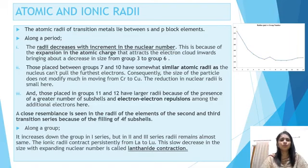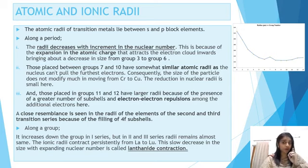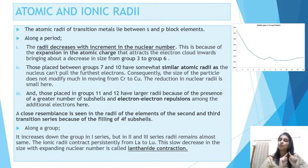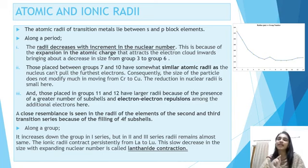Coming to the group trend: the first group has 3D, the next has 4D, and then 5D. In 4D there is an additional 4F orbital, and similarly 5F is also there. With the addition of an orbital, the F block elements — from lanthanum to lutetium, 14 elements in the middle of the long form of the periodic table — due to lanthanide contraction, the size decreases. Similarly for 5D, due to actinide contraction, the size decreases further.